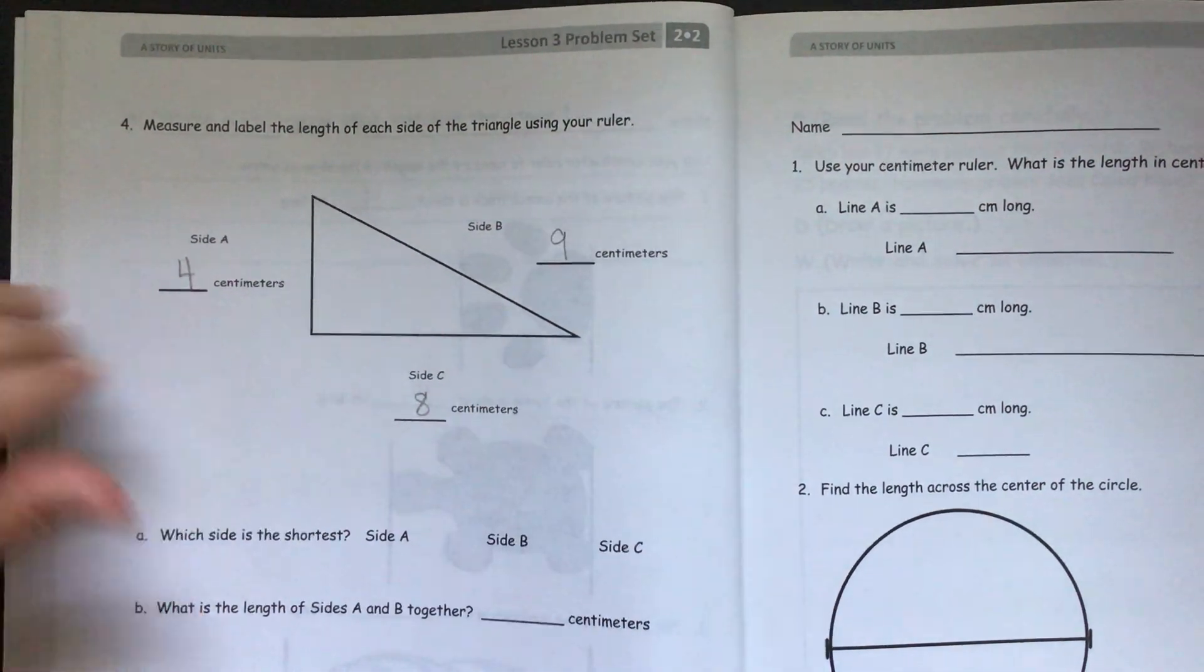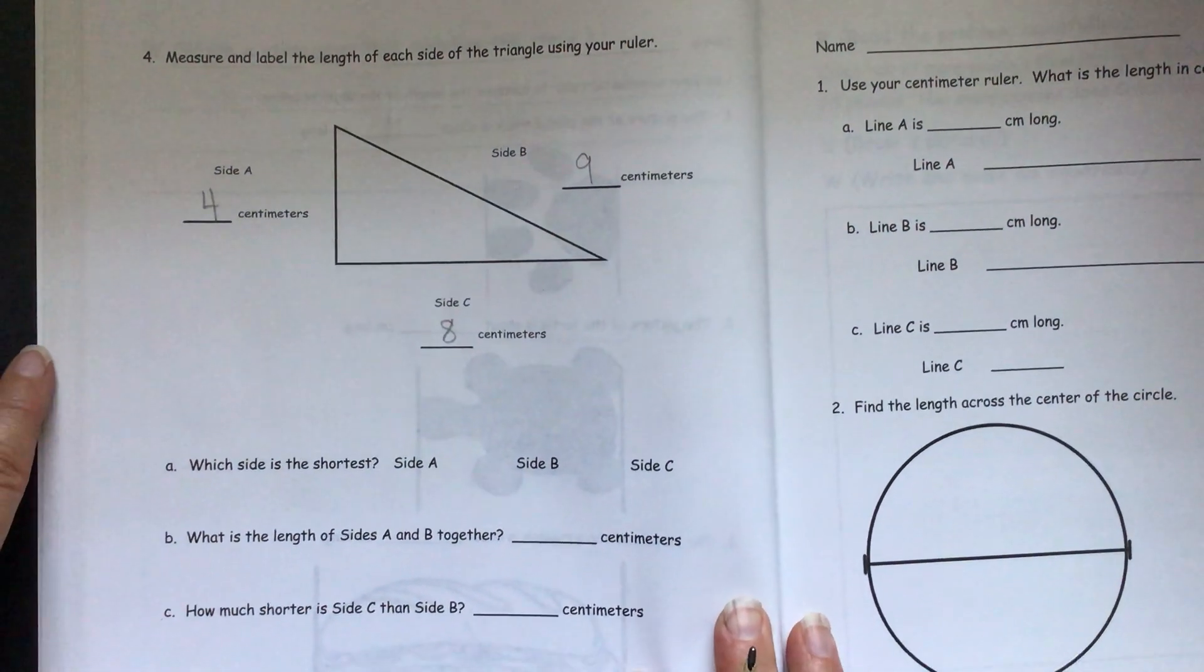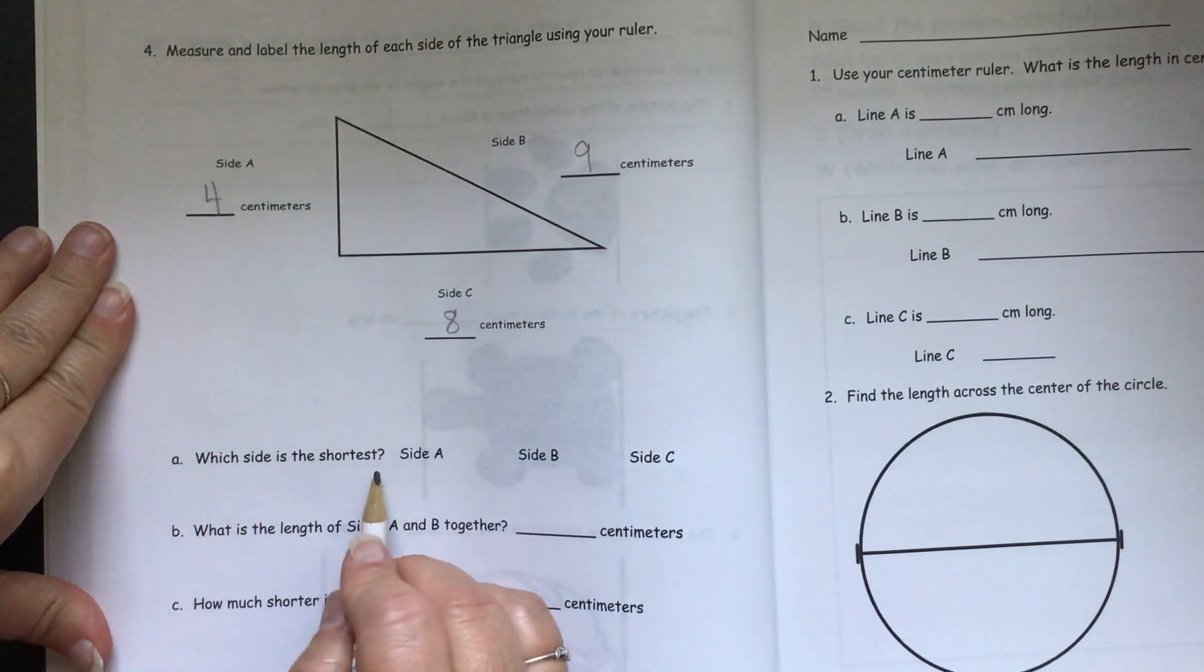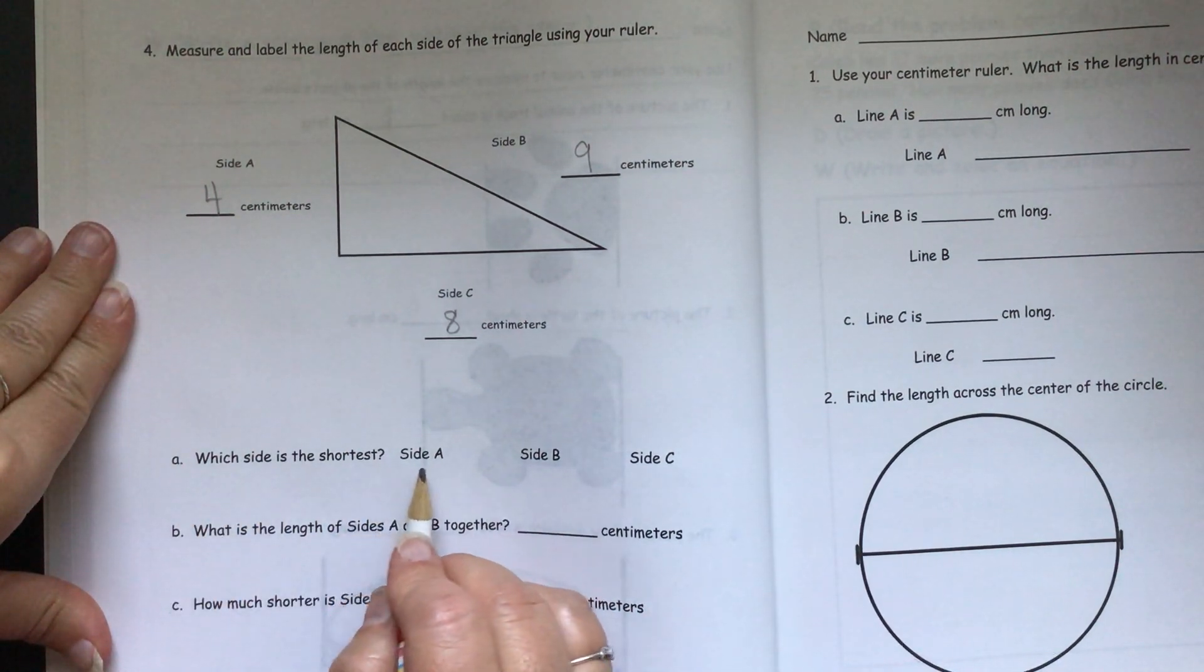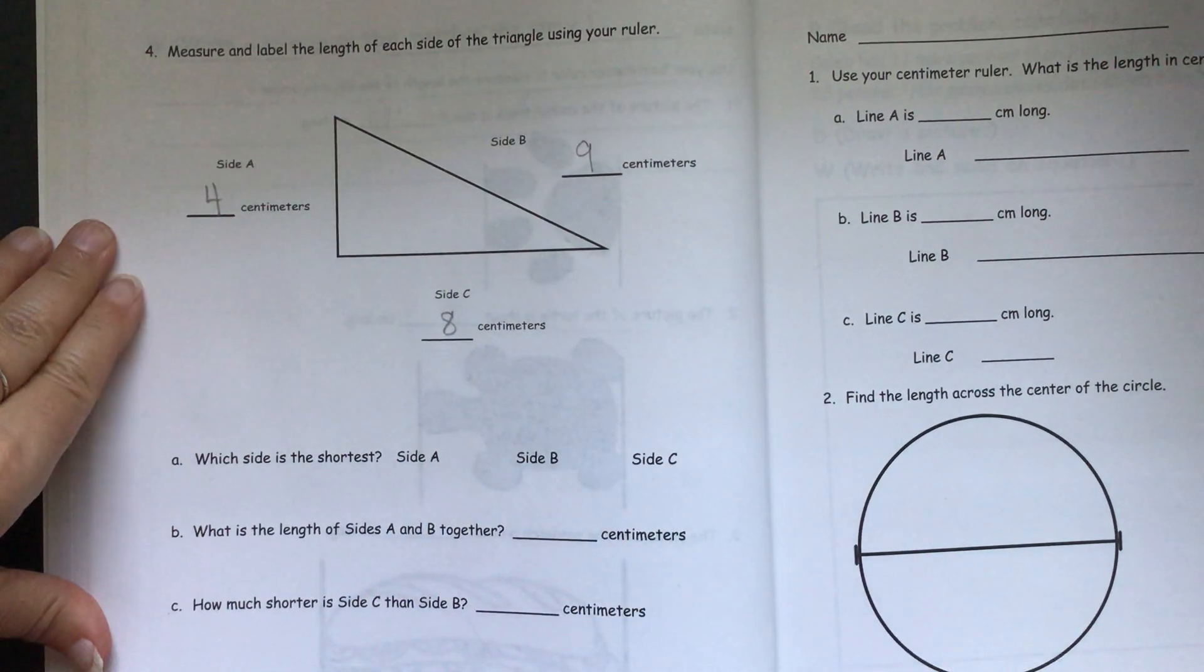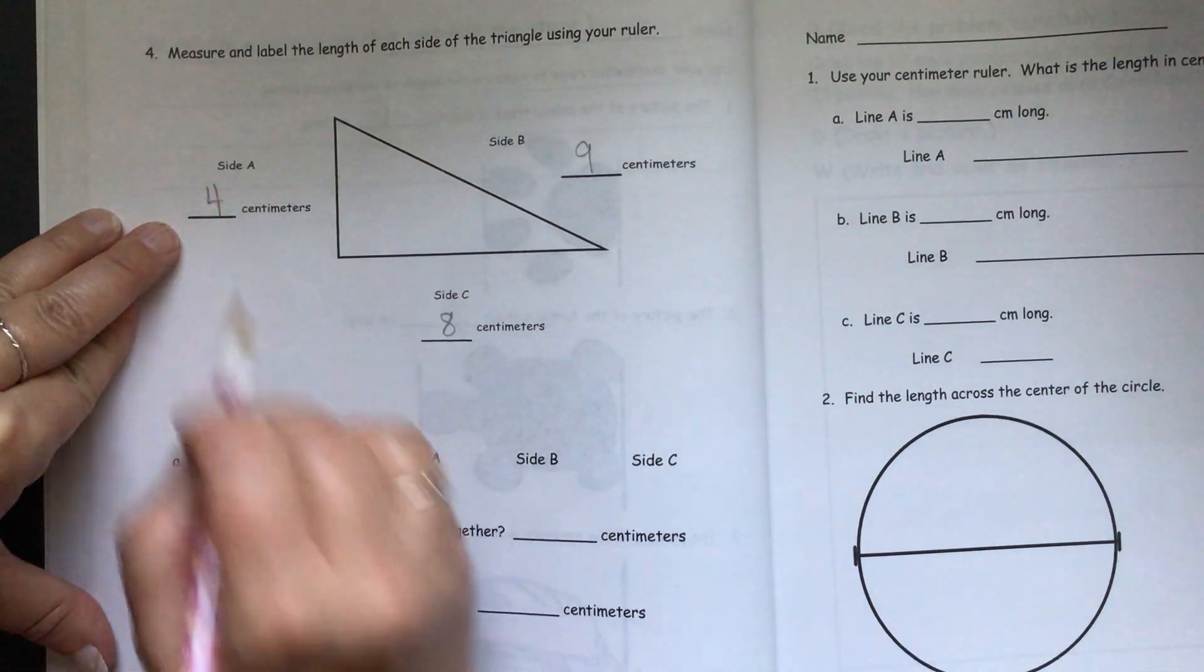Now we have some questions to answer about that. Which side is the shortest? Side A, side B, or side C? Well, you can see the smallest number is four. So, that's side A.